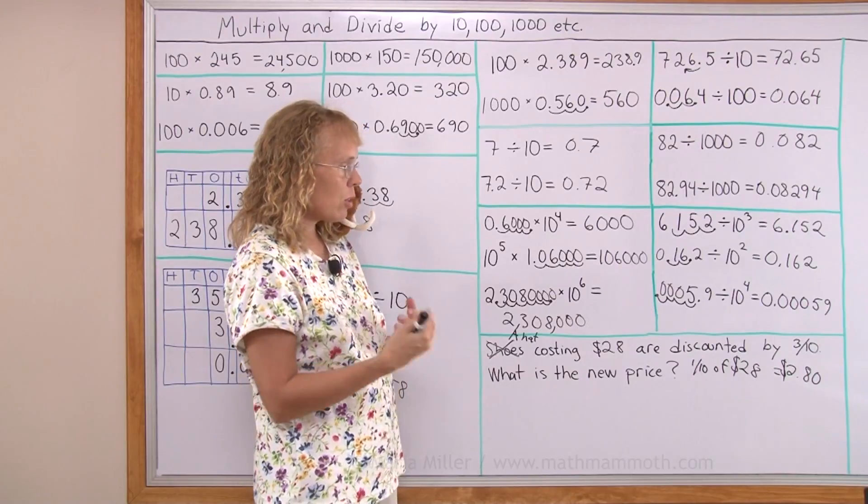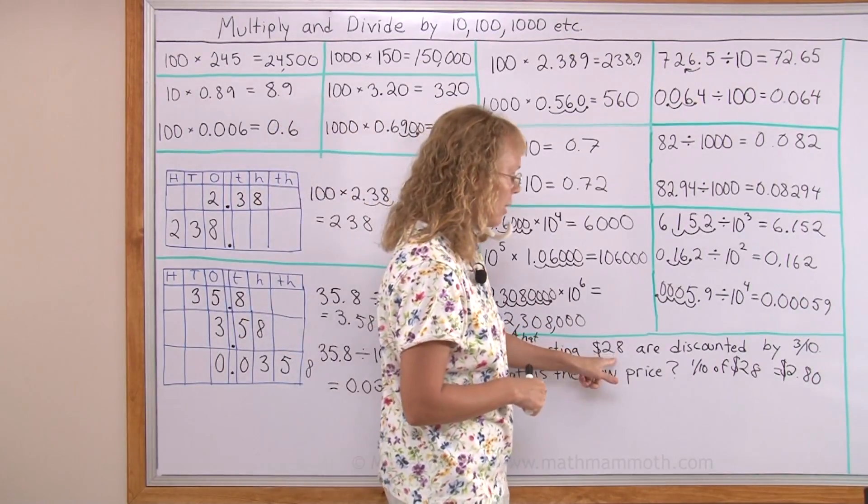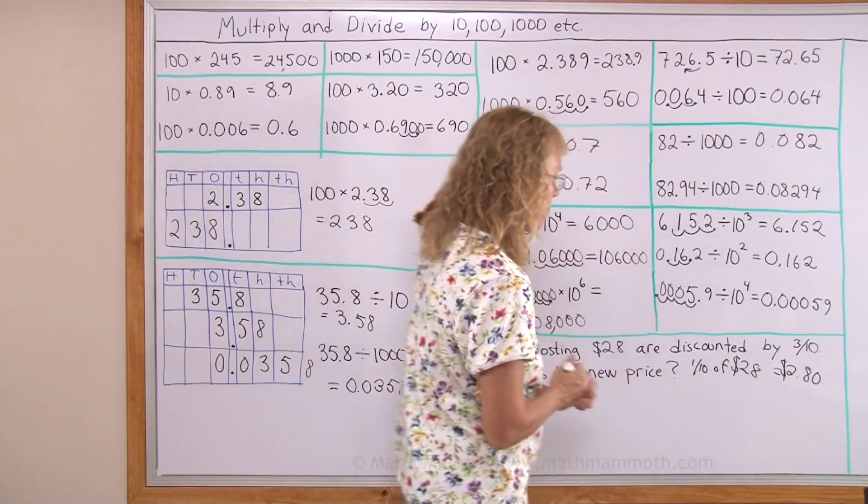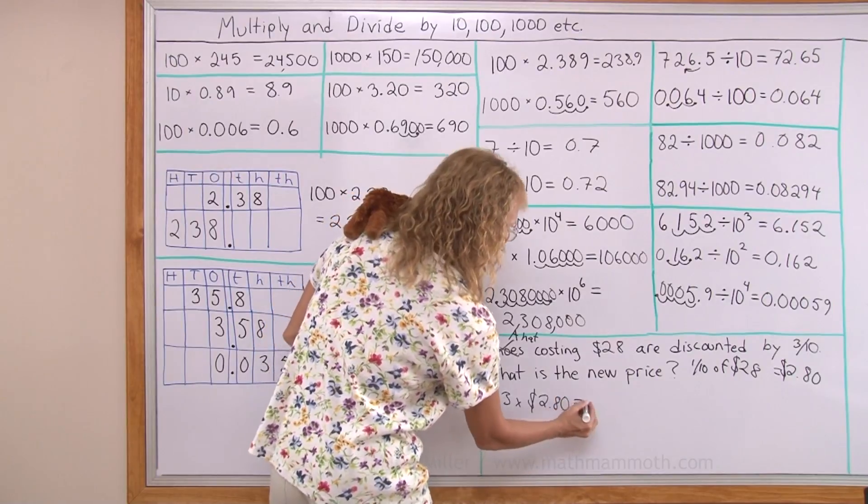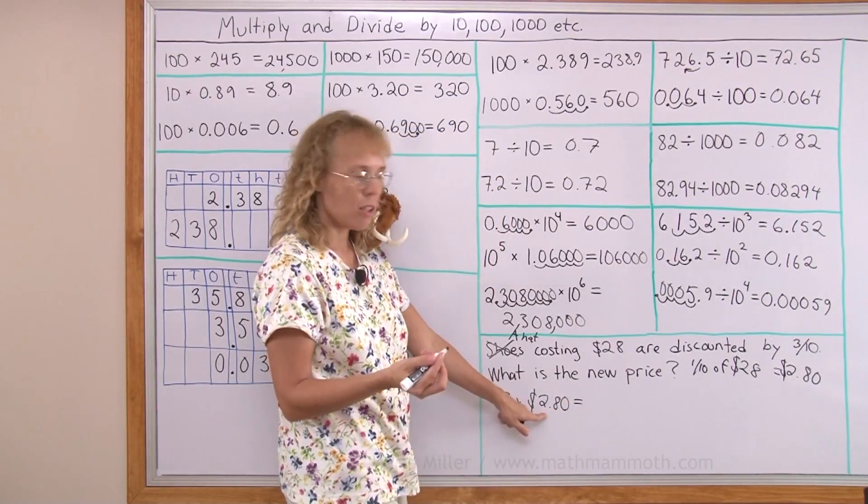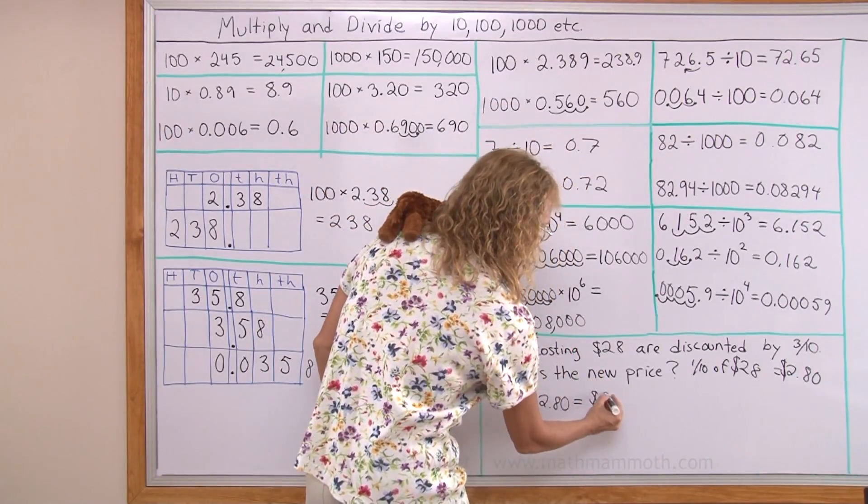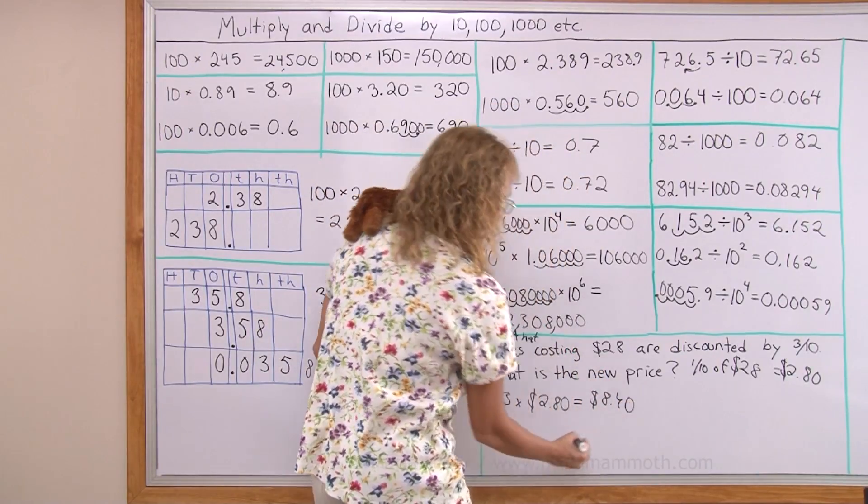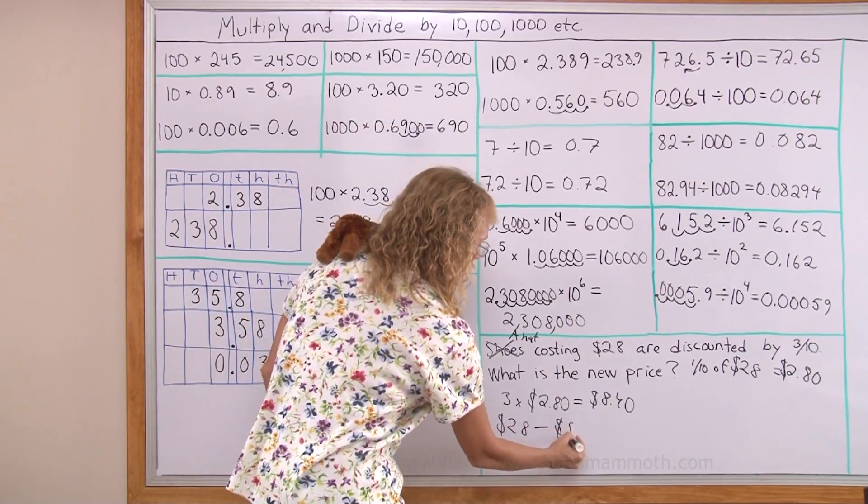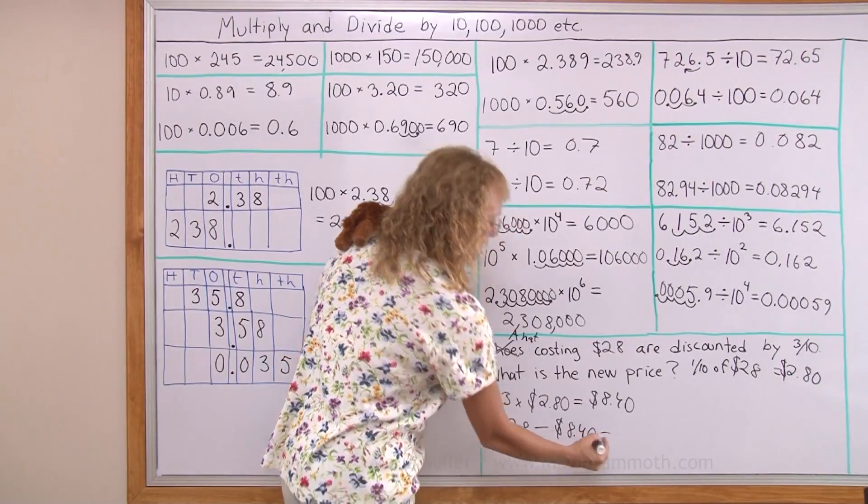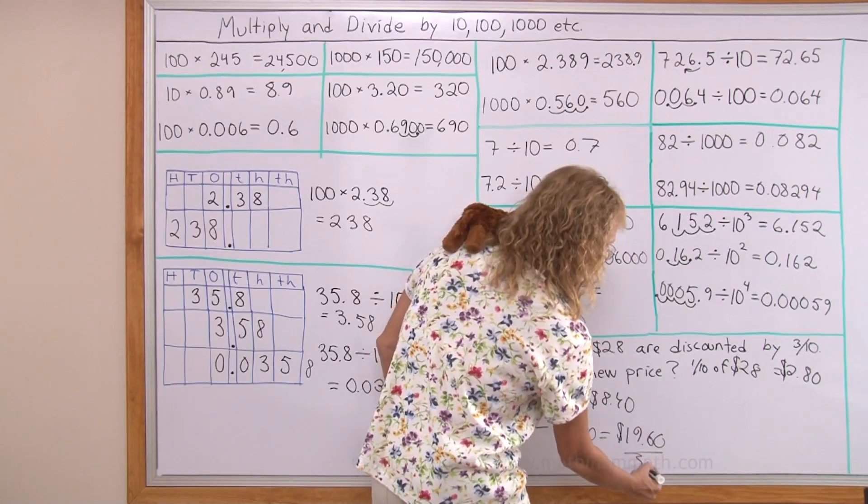And now we can either go seven times that amount or we can subtract from 28 three times that amount. Three times two eighty would be three times two is six dollars. And then three times eighty cents is two forty. So eight forty. And then subtract that from the price of the hat. 28 minus eight forty. It's just below twenty dollars. So we get nineteen and sixty.